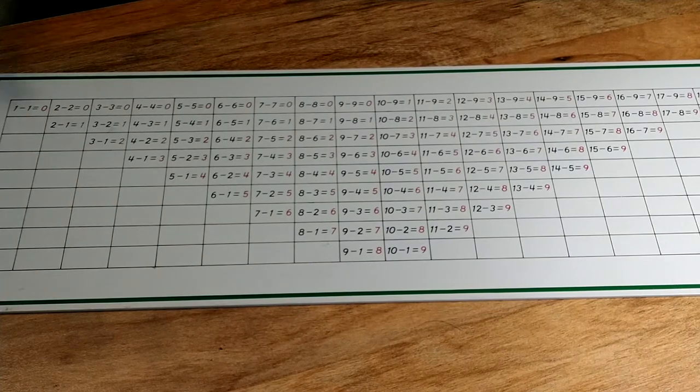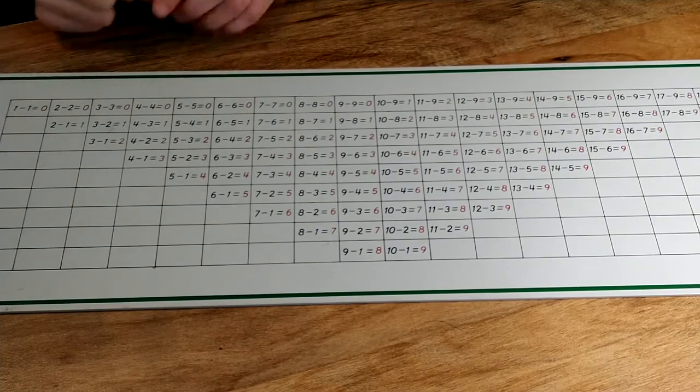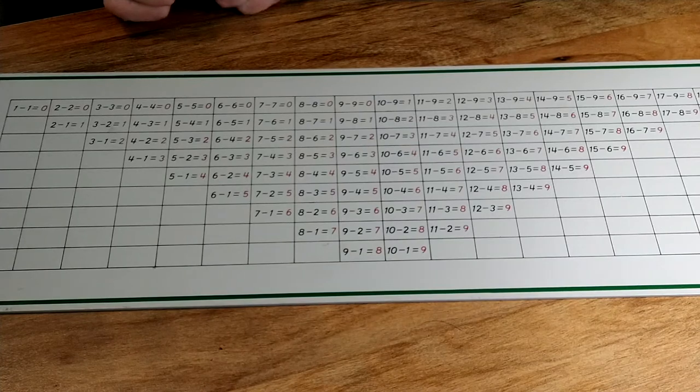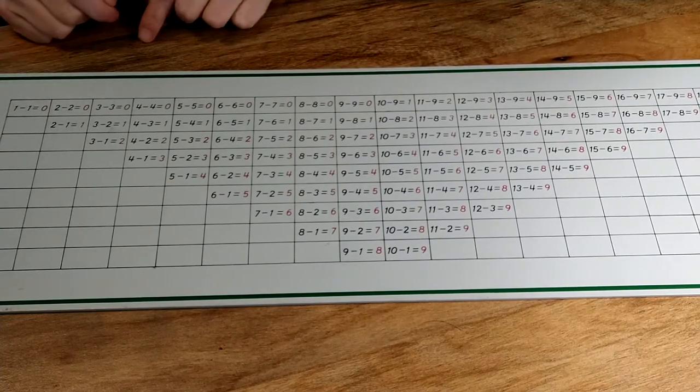Remember, the subtrahend is the number we start out with. If I have five cookies and someone eats three, my subtrahend is five. It's the cookies I had at the beginning.